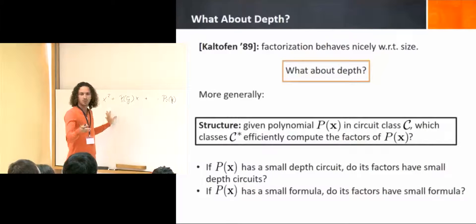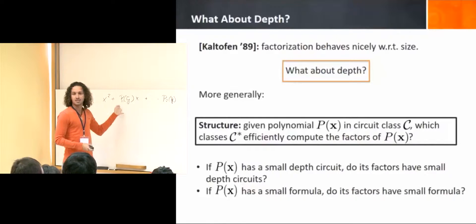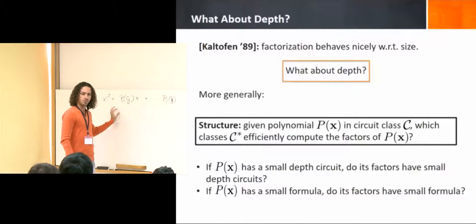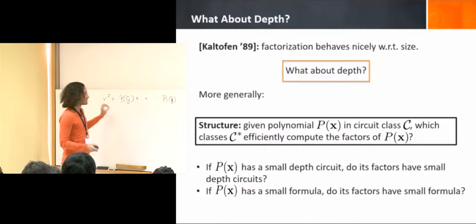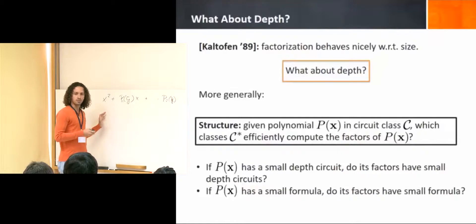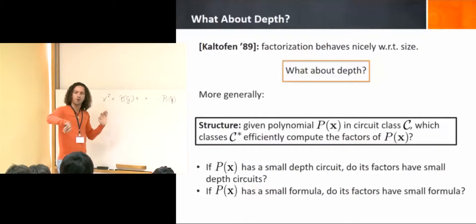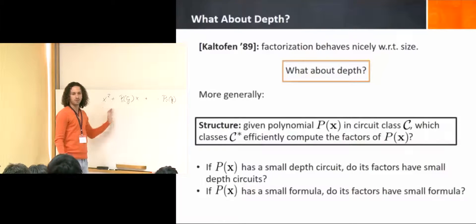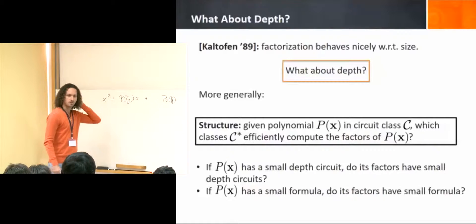Why are we studying bounded individual degree? There are technical reasons why bounded individual degree should work well — wild objects like resultants become simple objects when you bound the individual degree. So it's a good head start: we eliminate one of the problems that really hurts us, then try to understand the rest before adding the resultant back. The problem here already becomes widely non-trivial.